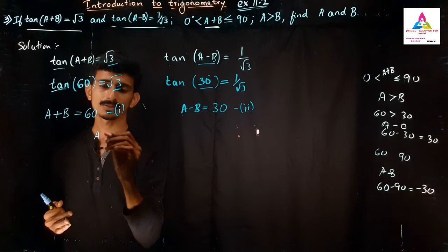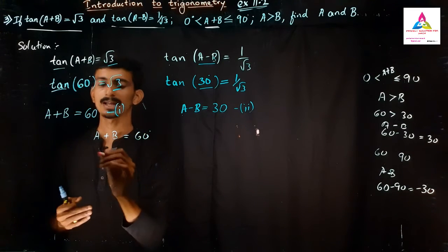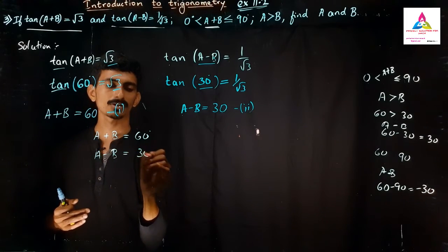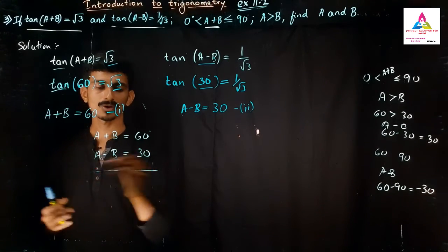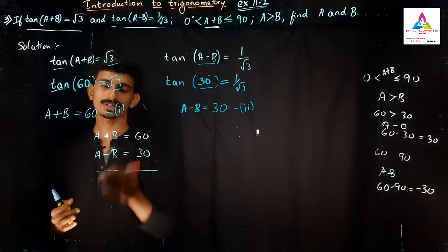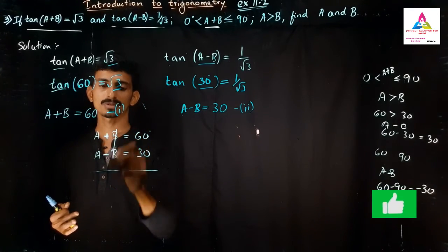Or I will go for a simple method, elimination method. A+B is equal to 60 we have, and here we have A-B, that value is 30 degrees. So subtract them both, or directly add them both. Because both the side we have B value we can subtract, means we can directly cancel them. Because if we will add together, B is having plus and minus, so B gets cancelled.